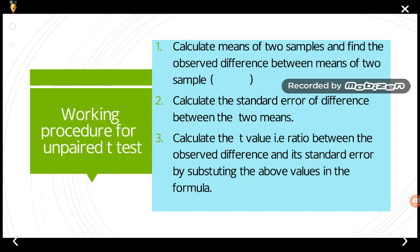Coming to the working procedure for the unpaired t-test: we know there are two types of t-test — unpaired and paired. Just by seeing the observation table, we can determine which rule is to be applied. To calculate the unpaired t-test, we follow certain steps.